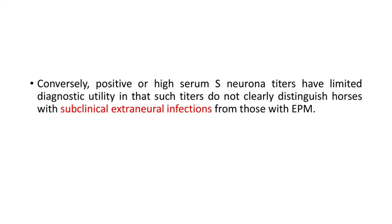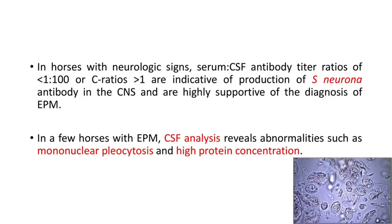In horses with neurologic signs, serum:CSF antibody titer ratios of less than 1:100, or C ratios more than 1, are indicative of production of S. neurona antibody in the CNS and are highly supportive of the diagnosis of EPM. In a few horses with EPM, CSF analysis reveals abnormalities such as mononuclear pleocytosis and high protein concentration.